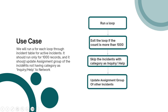The next condition is that it should update the assignment group of incidents not having the category as enquiry or help to network. We will be skipping the incidents which have the category as enquiry or help, and after skipping we will update the assignment group of all the other incidents. Here we will be using the skip action of the loop.